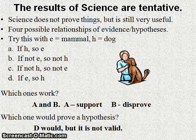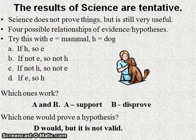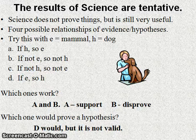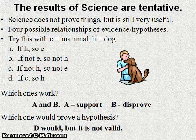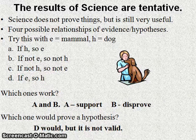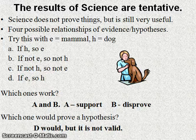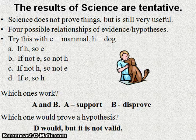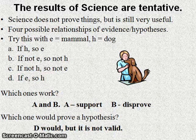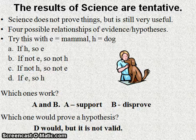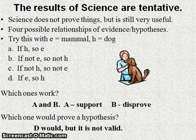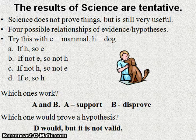Statement A: if H, then E — if the hypothesis is true, the evidence must be there. If it is a dog in the box, it must be a mammal. Statement B: if not E, then not H — if the evidence is not there, the hypothesis must be wrong. If it is not a mammal in the box, it must not be a dog. Statement C: if not H, then not E — if the hypothesis is wrong, the evidence must not be there. If it is not a dog in the box, it must not be a mammal. Statement D: if E, then H — if the evidence is there, the hypothesis must be correct. If it is a mammal in the box, it must be a dog.